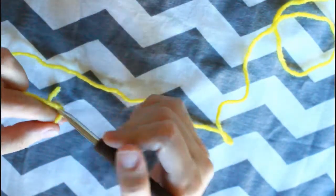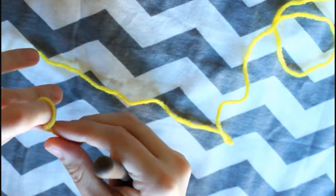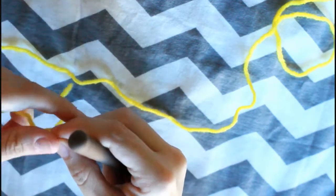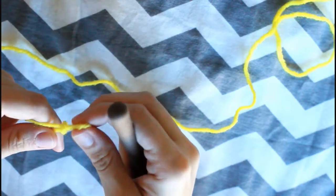With an I crochet hook and worsted weight yarn, I will start creating a slip knot.